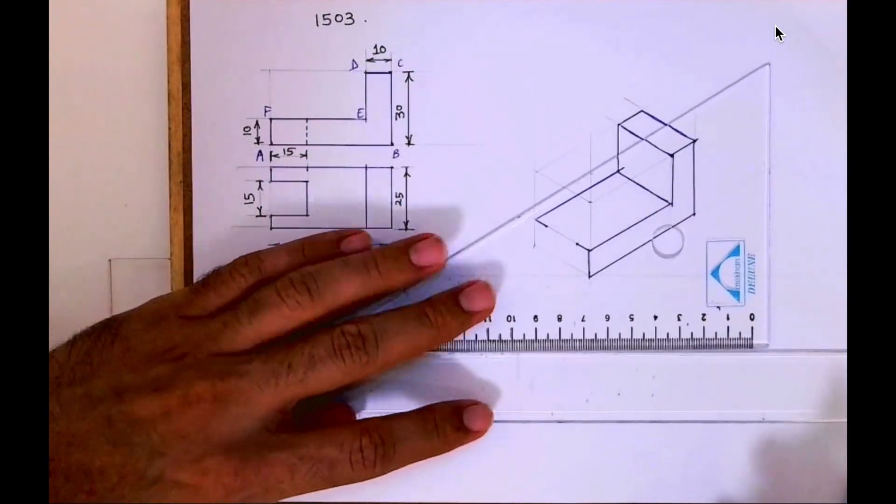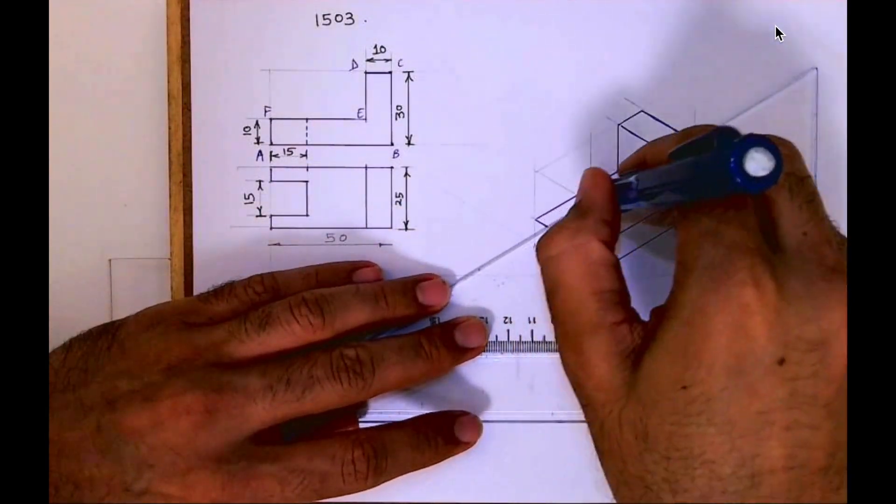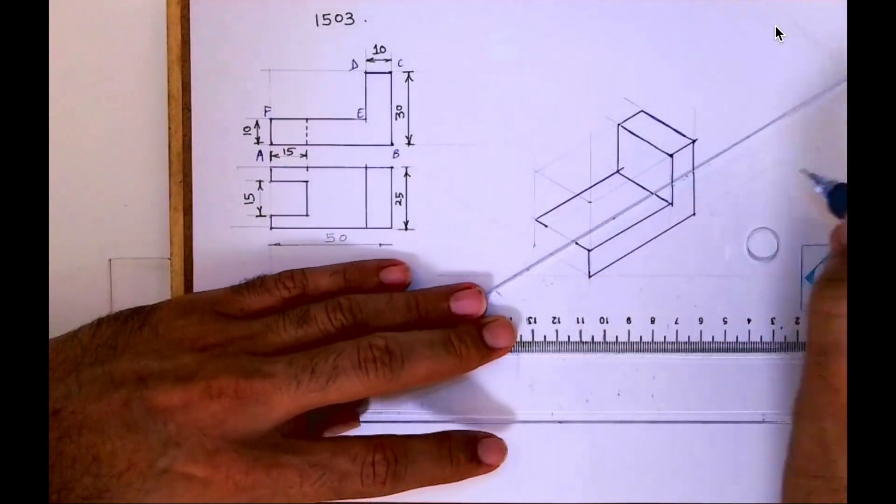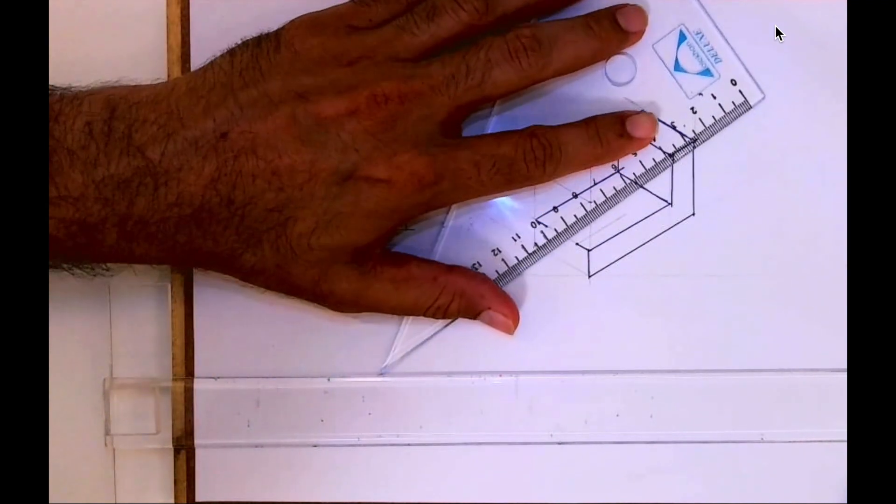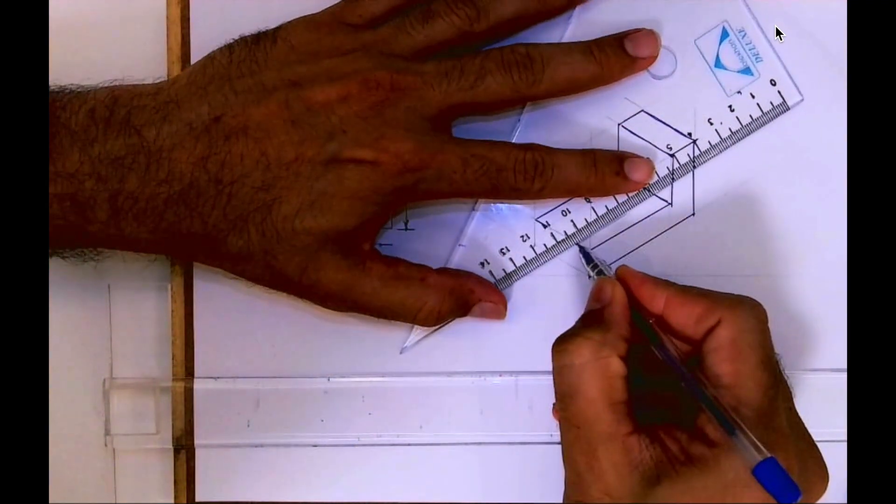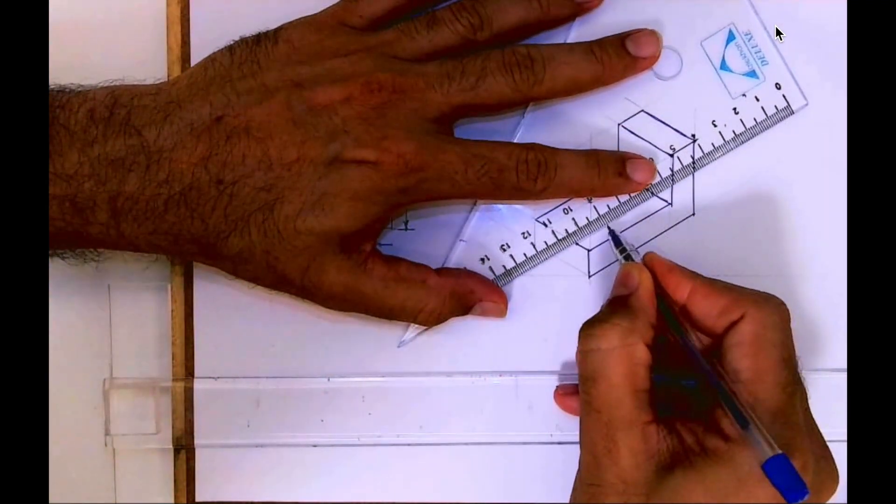Then I have to go inside by 15. See, 15 on both sides. So I have to cut 15 here.